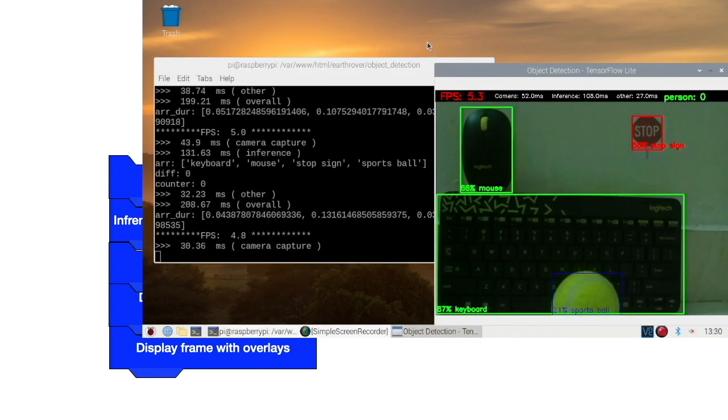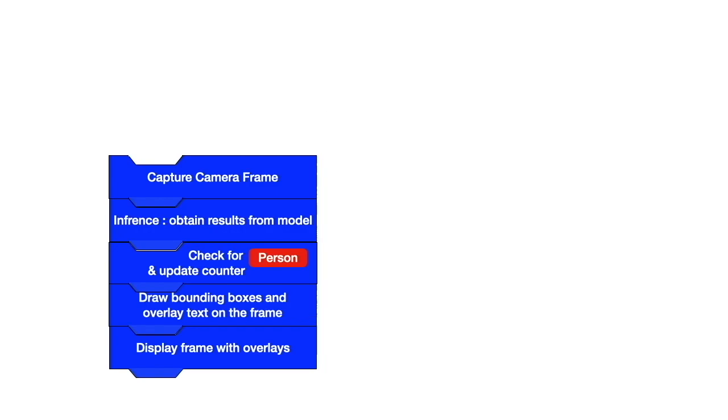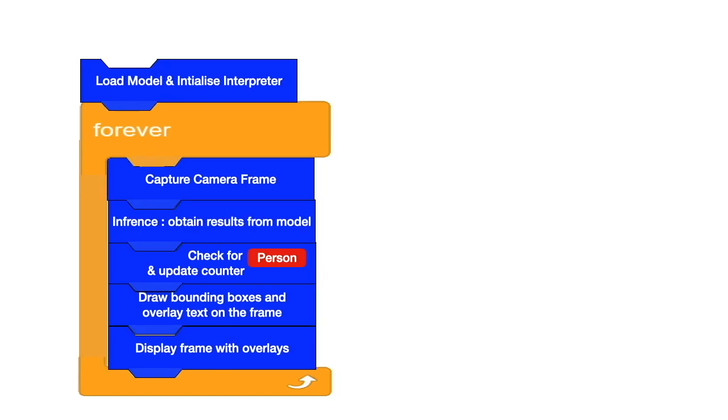The overlays include information bar showing FPS, processing times, object counter, and bounding boxes. The whole process is repeated continuously. Interpreter is initialized prior to entering the loop.